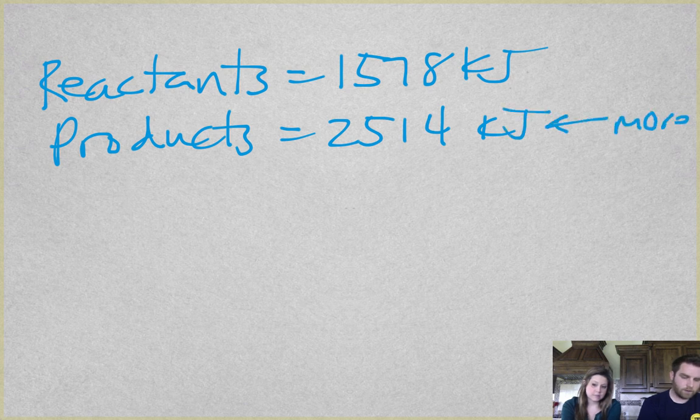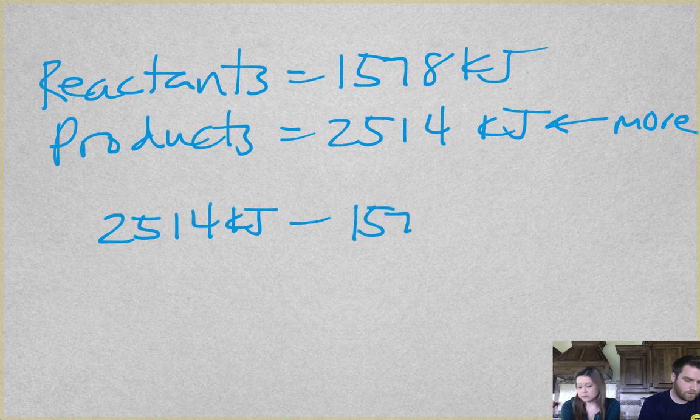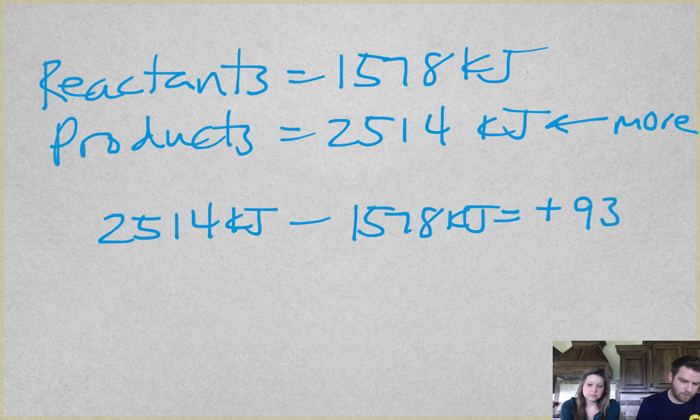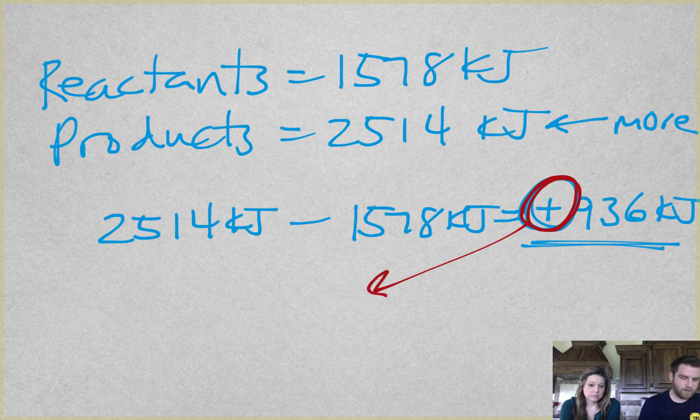So that would mean if we are doing our equation properly, we do products 2514 kilojoules minus 1578 kilojoules, that would give us positive 936 kilojoules. And this is how much energy had to be added in for the reaction to happen. So if it's positive, we had to add that in making it endothermic.